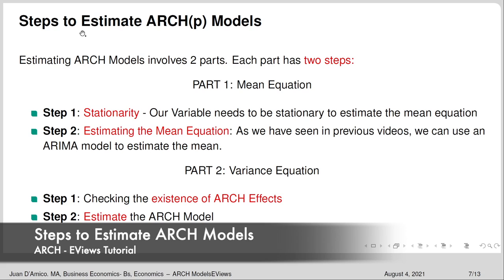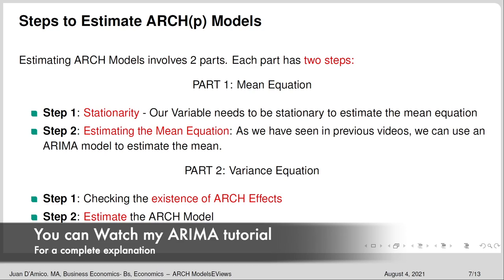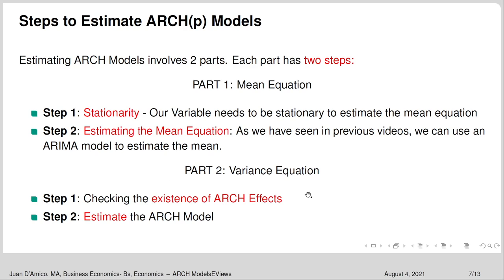What are the steps to estimate ARCH models? Estimating ARCH models involves two parts, each with two steps. Part one is the mean equation: step one is checking stationarity, and step two is finding the appropriate ARIMA model to estimate the mean. Part two is the variance equation: once the mean is estimated, we check if ARCH effects exist, and if they do, we estimate the ARCH model. Please feel free to watch my ARIMA models tutorial for more detail on that procedure.